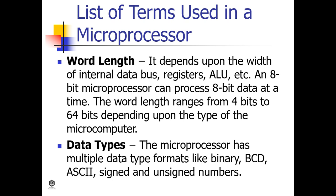An 8-bit microprocessor can process 8-bit data at a time. The word length ranges from 4 bits to 64 bits depending upon the type of microcomputer. Data types: the microprocessor supports multiple data type formats like binary, BCD, ASCII, and signed and unsigned numbers.